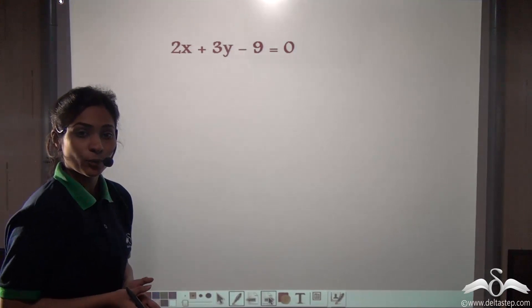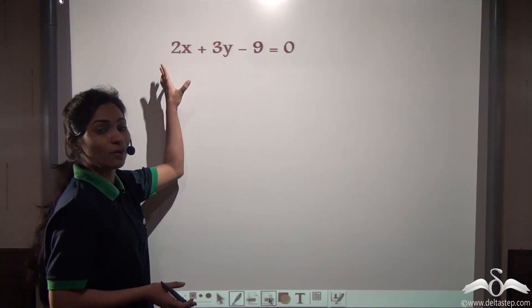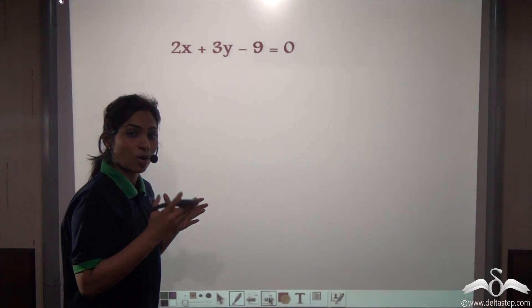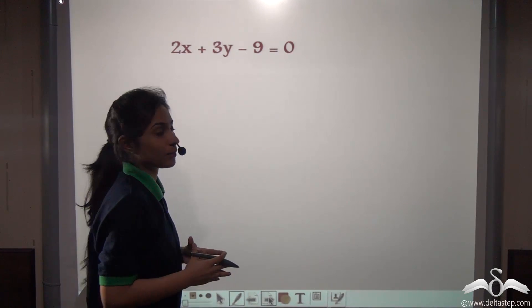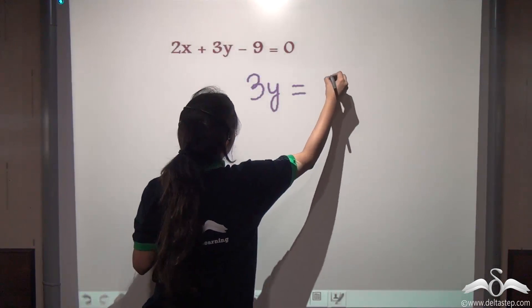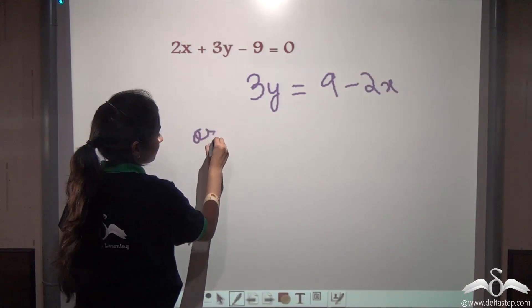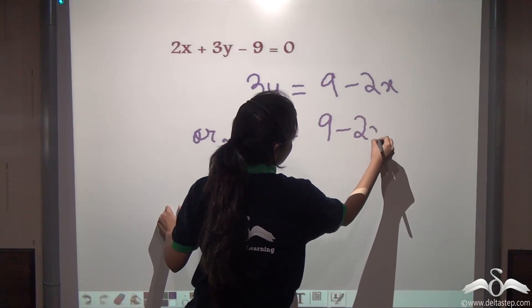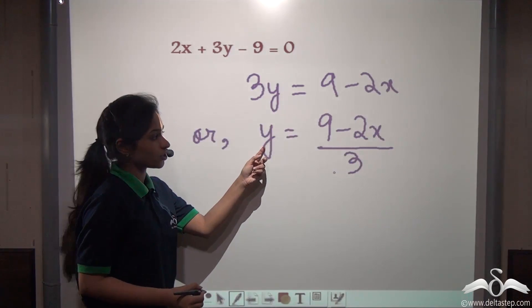First of all, what do we do? We first make y the subject of the equation so that when we put values for x, we get the subsequent values for y, and then this combination of x and y will give us the coordinates to graph on the graph paper. So 3y is equal to 9 minus 2x, or y is equal to (9 minus 2x) by 3. Here y is the subject of this equation.